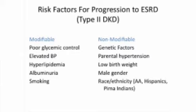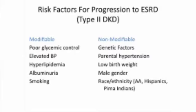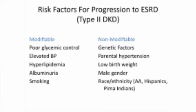Risk factors for progression of diabetic kidney disease to end-stage renal disease — these refer mostly to patients with type 2 diabetic kidney disease, about 95% of patients. On the left are modifiable risk factors — things we can do something about. Poor glycemic control or poor sugar control will make the disease progress faster. Uncontrolled blood pressure, as just illustrated in that case, is another thing that will make the disease progress faster. High cholesterol will make the disease progress faster. The more protein you have in the urine, the faster you will progress. And if you smoke, the disease will progress faster.